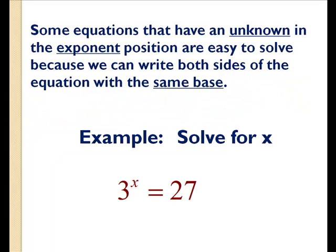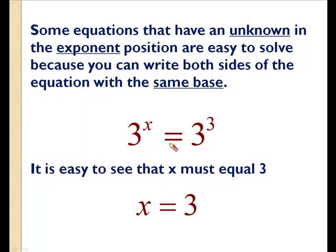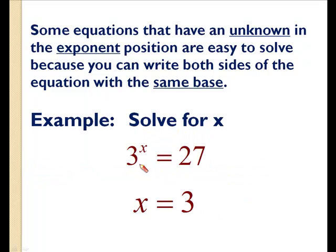For example, 3 raised to the x equals 27. I'm going to ask you to solve for x. What I would suggest would be to rewrite the 27 with a base of 3. So 27 rewritten with a base of 3 becomes 3 raised to the third, because 3 times 3 times 3 is 27. Our original equation goes from 3 raised to the x equals 27 to 3 raised to the x equals 3 raised to the third. You can see that x equals 3 is our only solution.